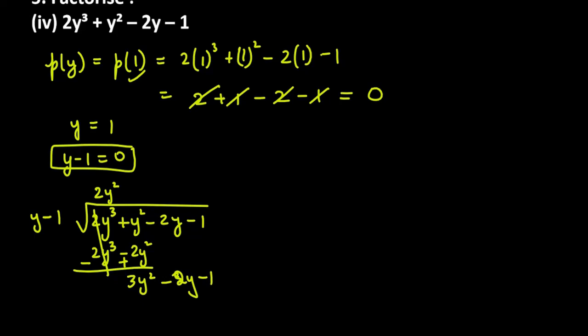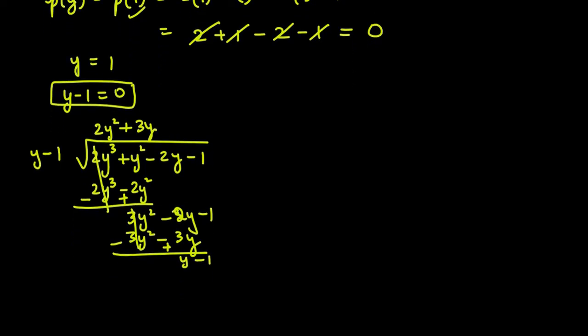To make y into 3y square, multiply by 3y. So 3y square appears. 3y times minus 1 gives minus 3y. After sign change for subtraction: 3y square cancels. Then minus 2y plus 3y gives y. Bring down minus 1. Now we see the remaining expression is exactly y minus 1. So multiply by 1: y minus 1. After sign change, y minus 1 cancels, leaving 0.